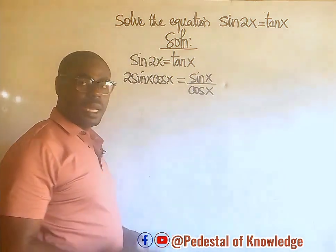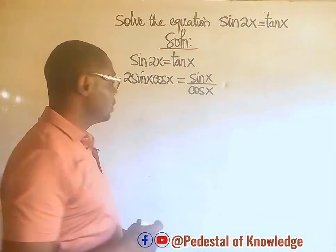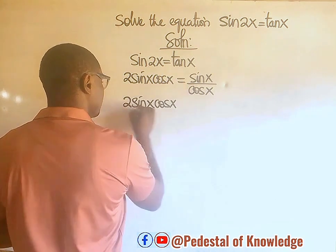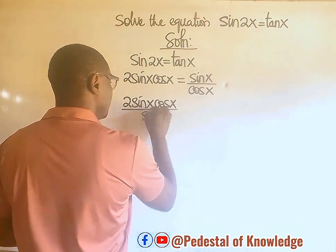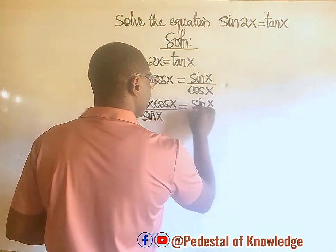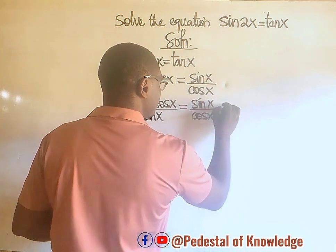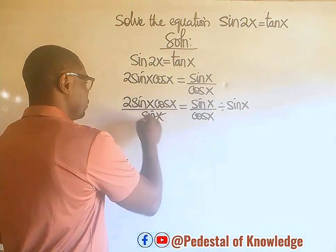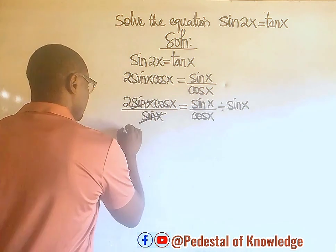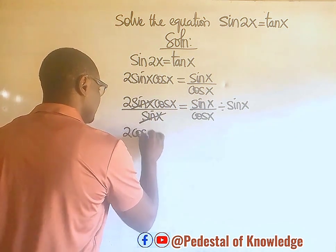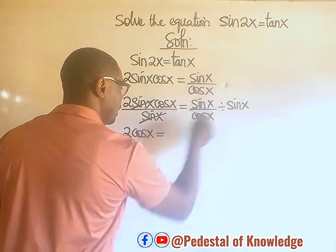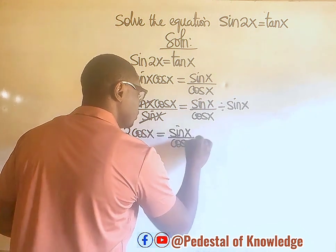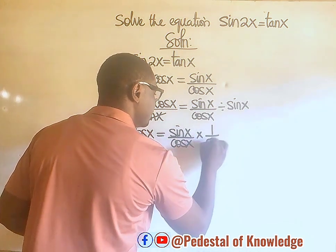So what we need to do now is to divide both sides by sine x. We have 2 sine x cos x divided by sine x, is equal to sine x over cos x, divided by sine x. It is very clear that sine x cancels sine x, so we are left with 2 cos x on the left-hand side. On the right-hand side, we have sine x over cos x multiplied by 1 over sine x.